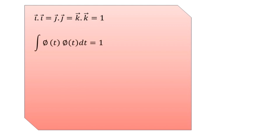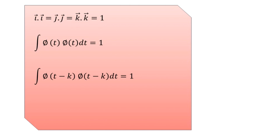Checking the orthonormality condition for V0: we carry out integration of the Haar scaling function phi(t) multiplied by itself over the entire time range, and we get a result equal to 1. So orthonormality is verified. Similarly, phi(t − k) multiplied by phi(t − k), integrated over the entire timescale, also equals 1. So for the V0 functional space defined using the Haar scaling function, orthonormality is satisfied.